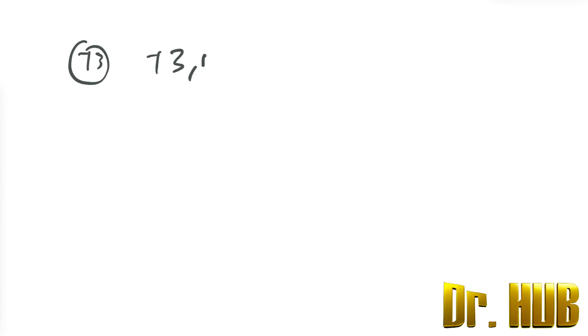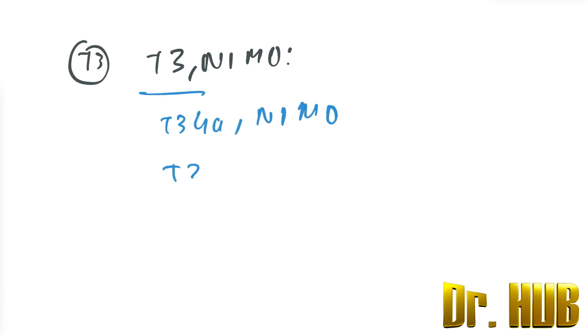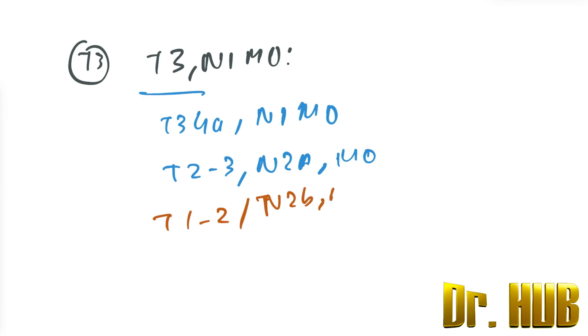Stage 3B in the 7th edition is T3, N1, M0. In the 8th edition, Stage 3B is T3–T4A, N1, M0 or T2–T3, N2A, M0, or T1–T2, N2B, M0.